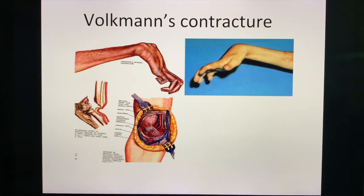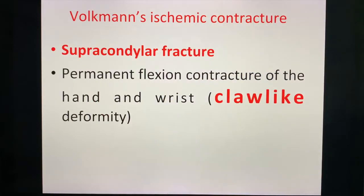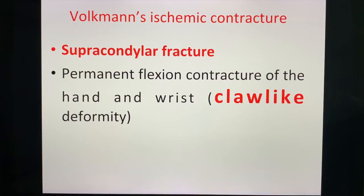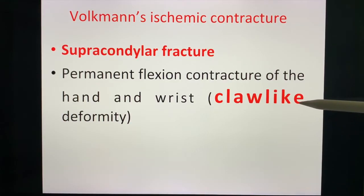Winding down, we have Volkmann's contracture. This is usually encountered when you have a supracondylar fracture and the brachial artery is injured secondary to that fracture. The patient develops ischemia, and this ischemic contracture — a permanent flexion contracture involving the hand and the wrist giving a claw-like deformity — is known as Volkmann's ischemic contracture.